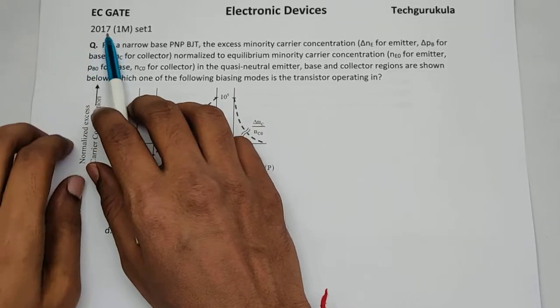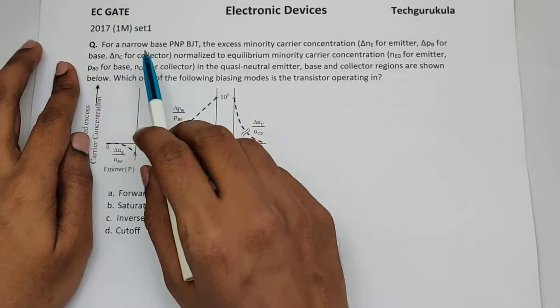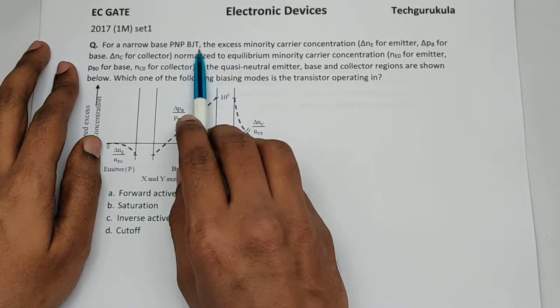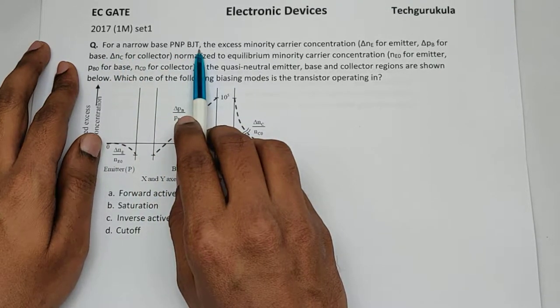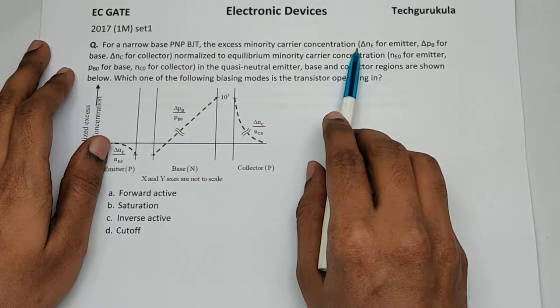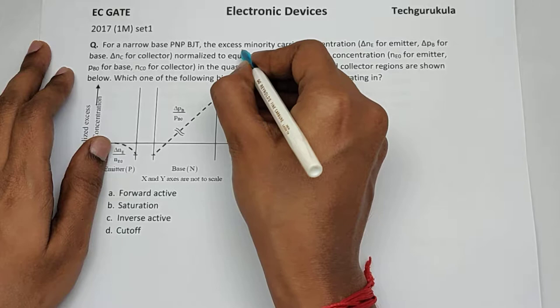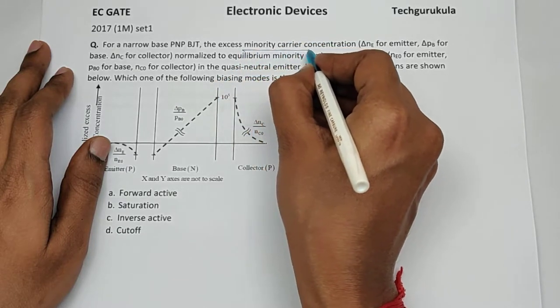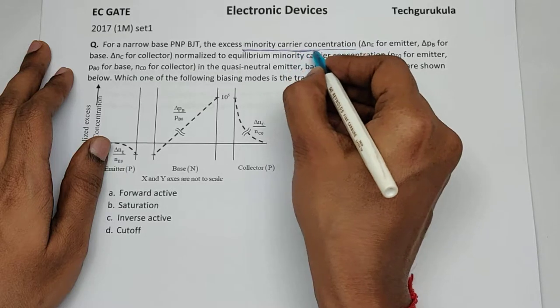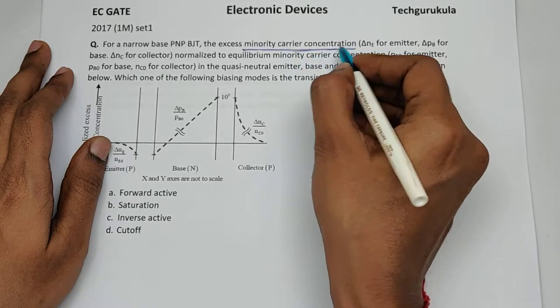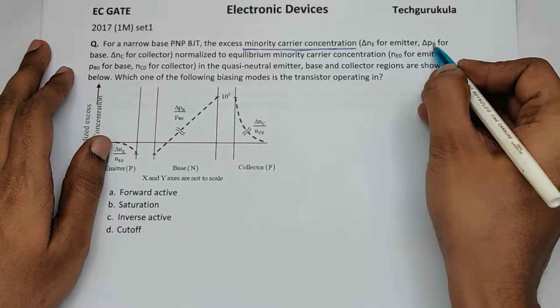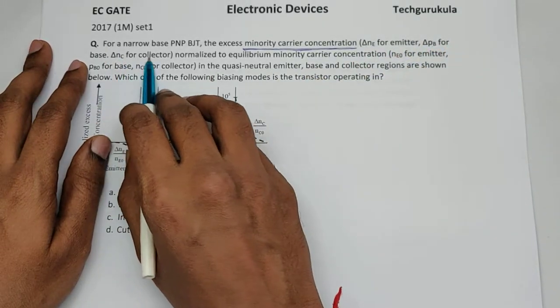This question came in 2017 for one mark. The question is: for a narrow base PNP BJT, the excess minority carrier concentration—in fact, we always talk about minority carrier concentrations while discussing because they are the most important in terms of current conduction. ΔNE for emitter, ΔPB for base, ΔNC